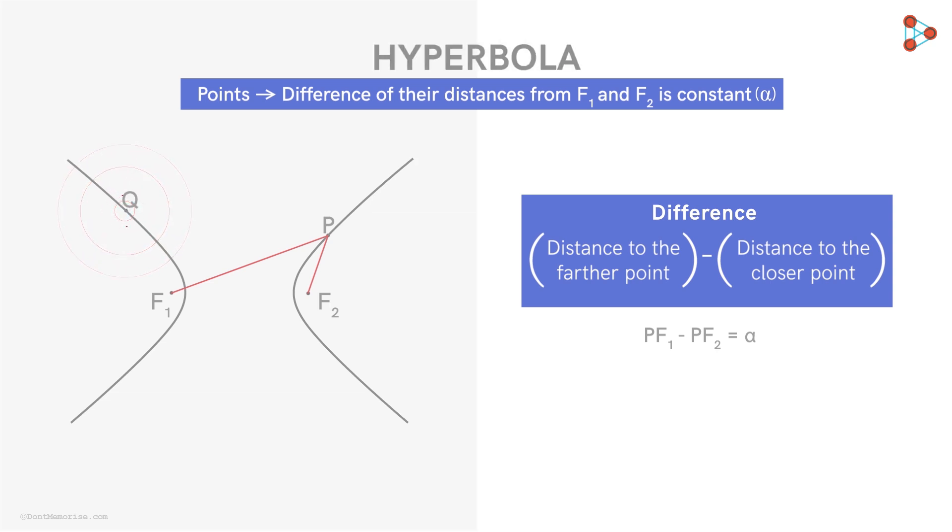Consider this point Q on the hyperbola. The difference of its distances from the two fixed points will be equal to alpha. Since for point Q, F2 is the farther point, the difference QF2 minus QF1 will be equal to alpha. Similarly, for this point R on the hyperbola, its distance RF1 minus RF2 will be equal to alpha.